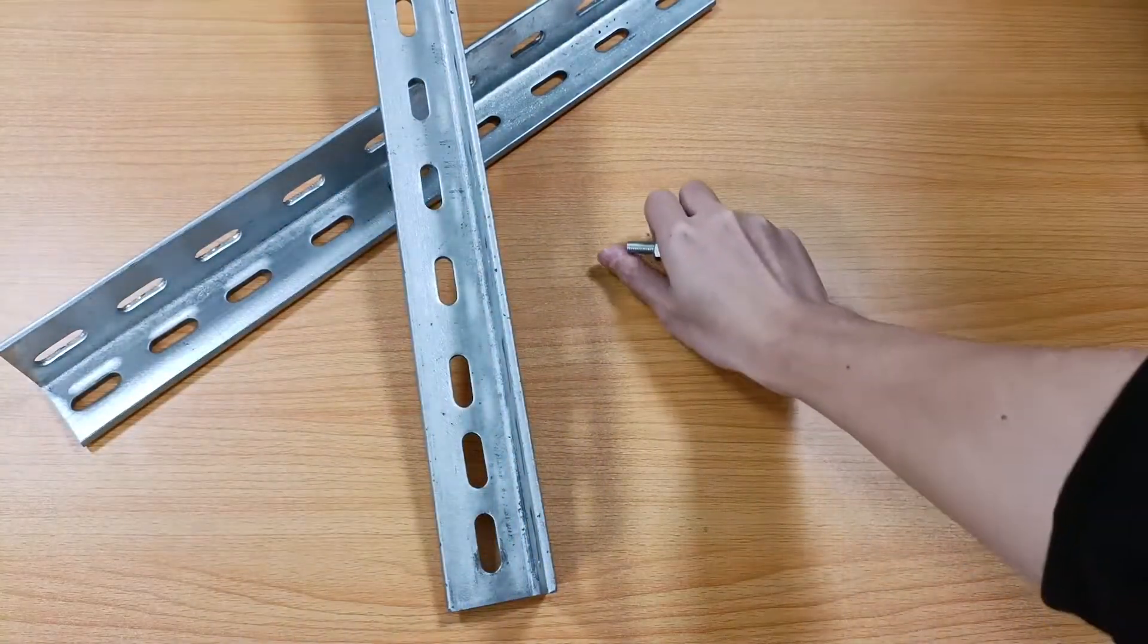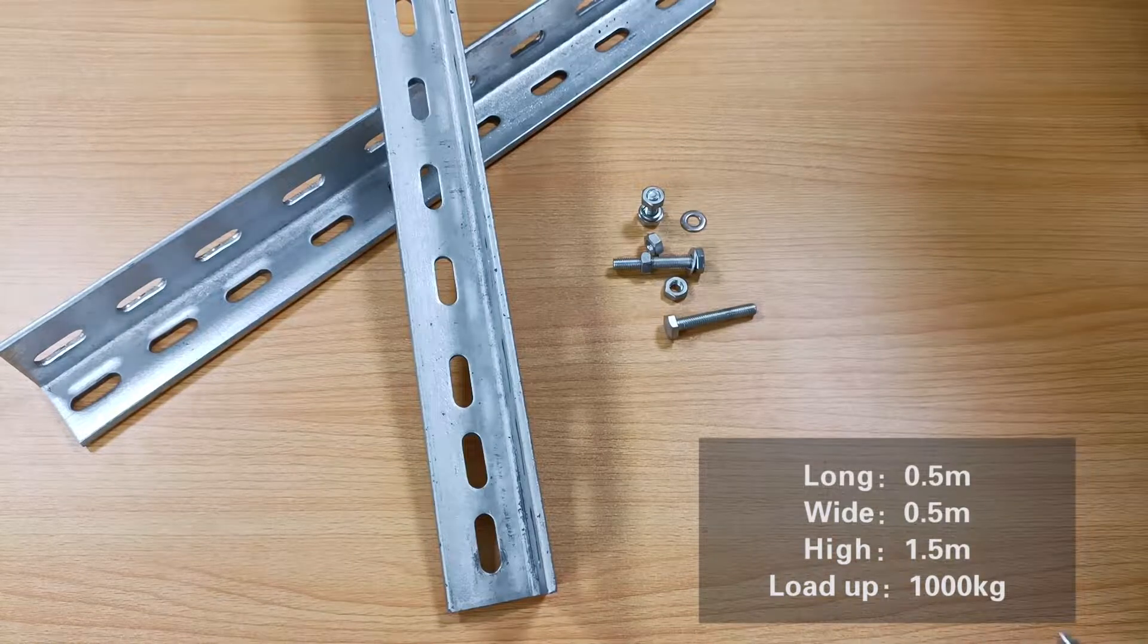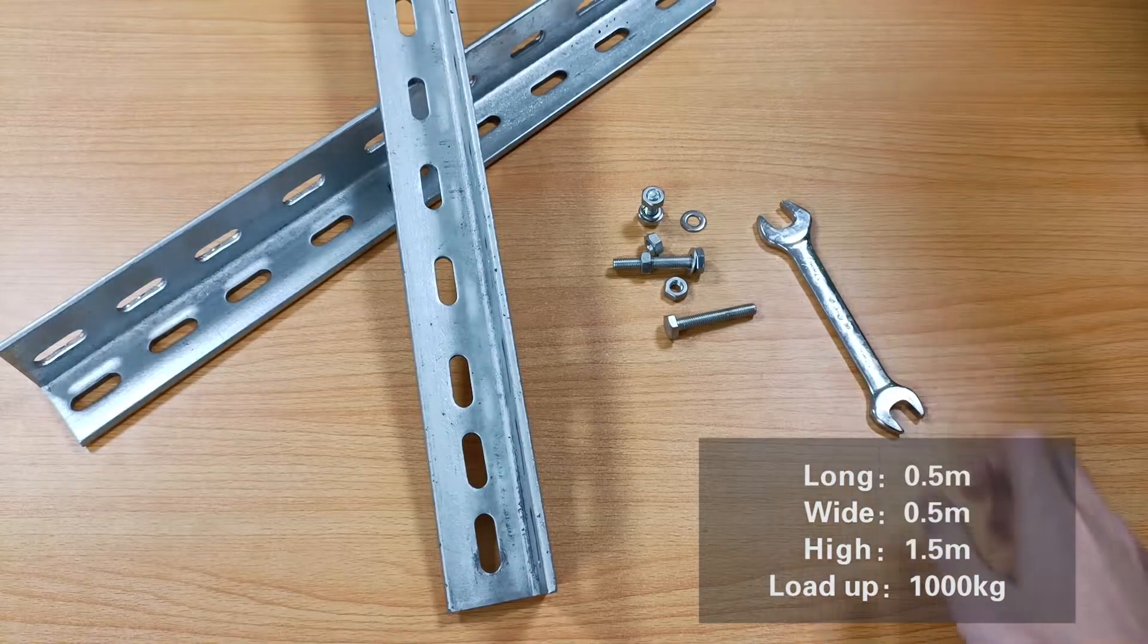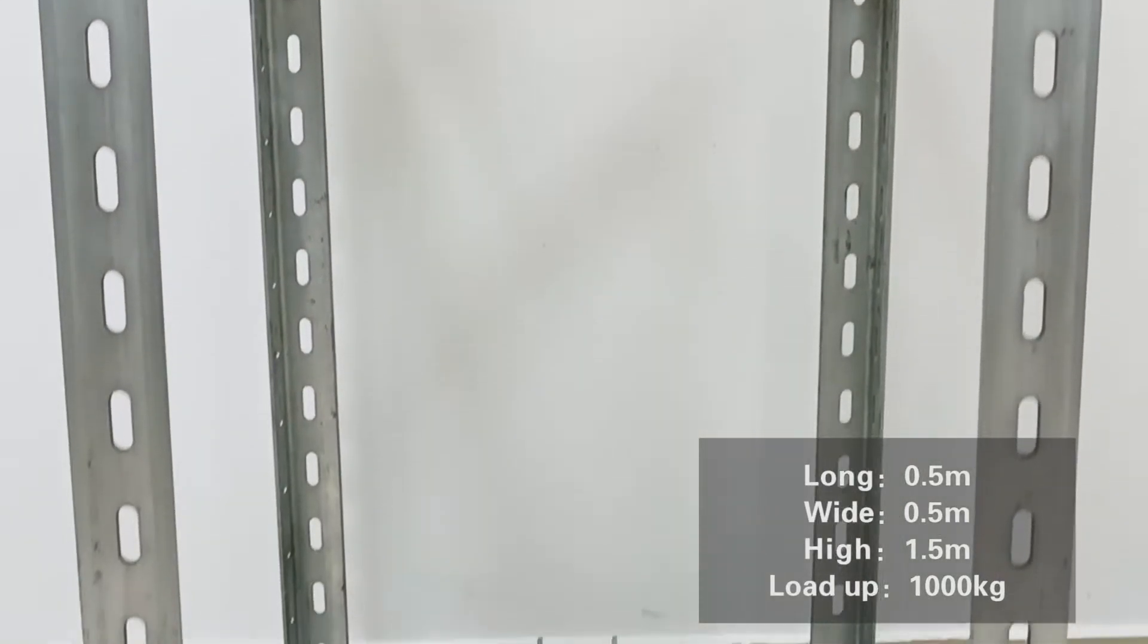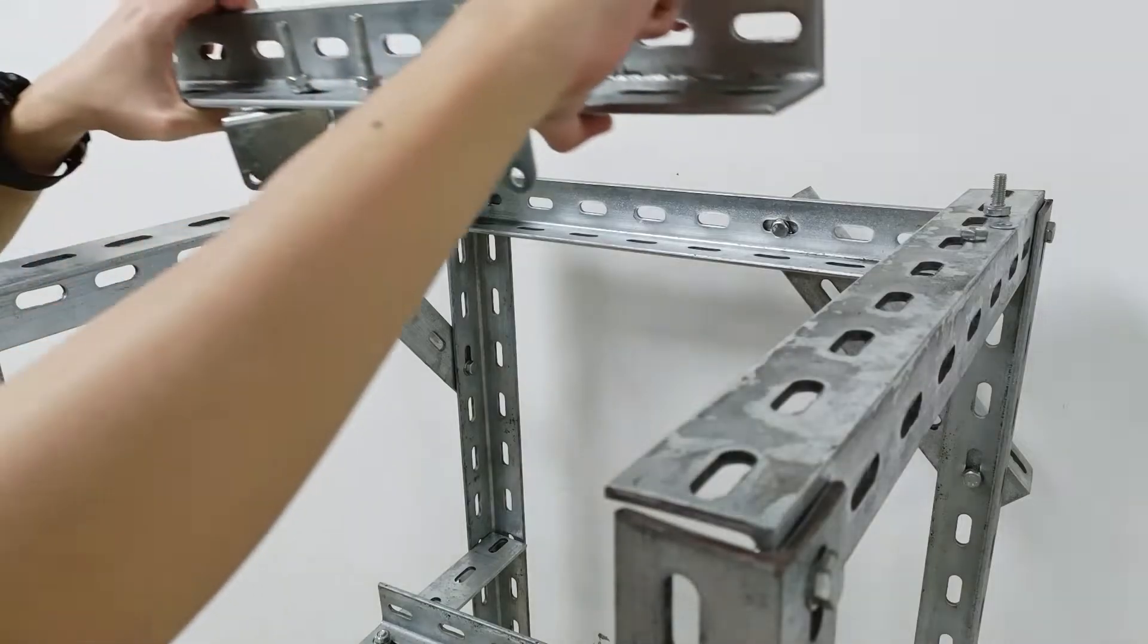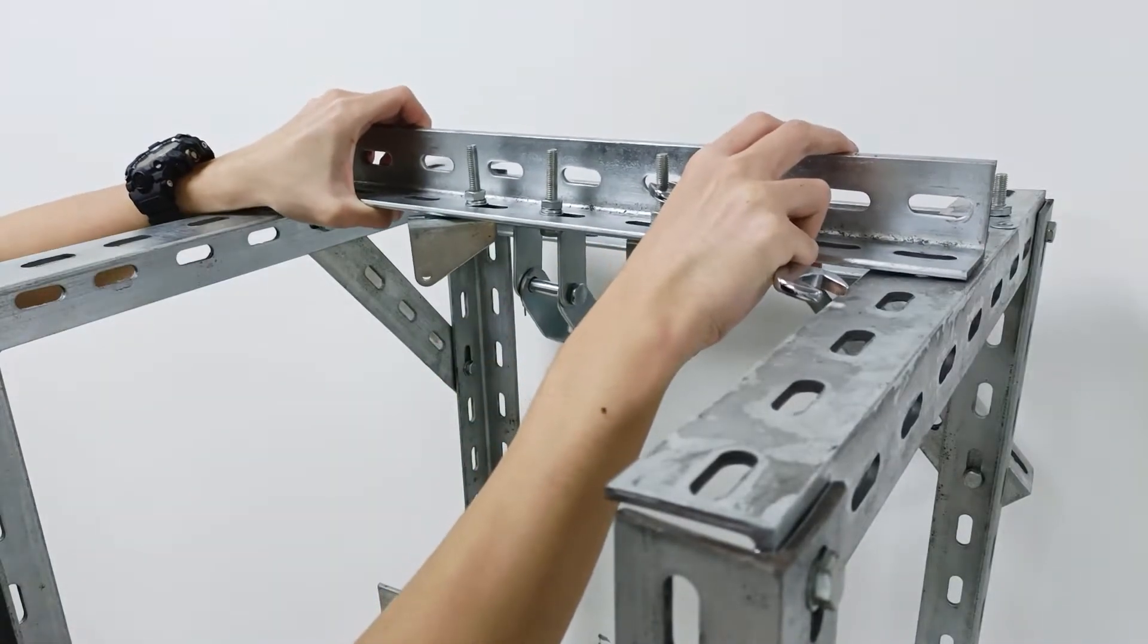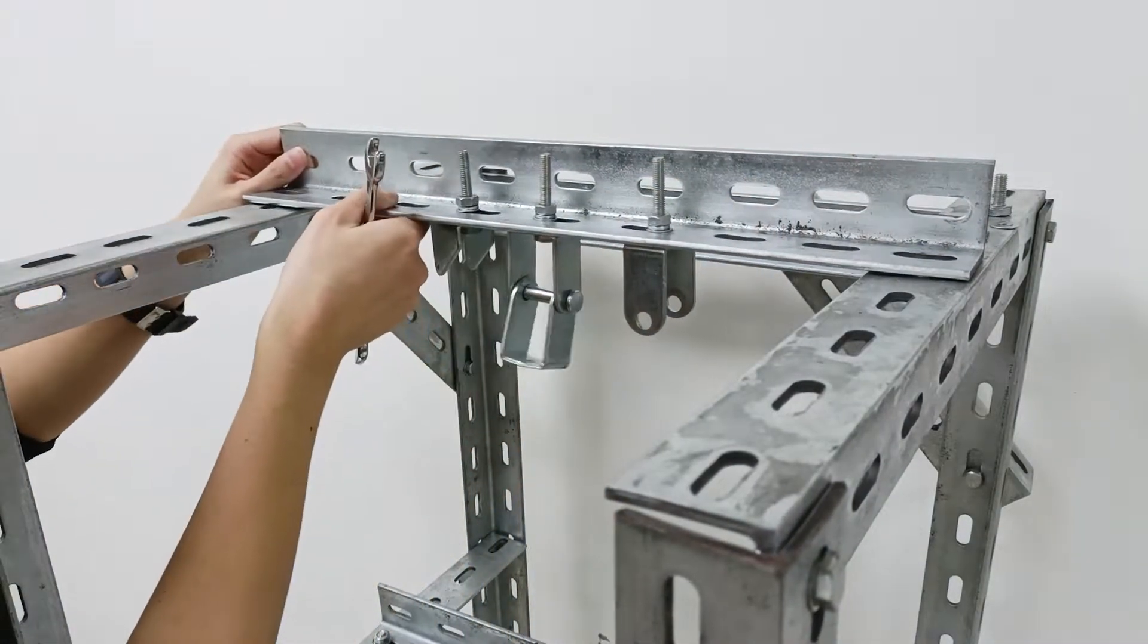The frame is 0.5 meters long, 0.5 meters wide, and 1.5 meters high, and can load up to 1000 kilograms. Next, we install a beam on the top of the test frame and install a linear actuator fixing bracket in the middle so that we can fix the linear actuator on the top of the test frame.